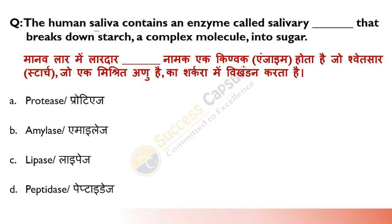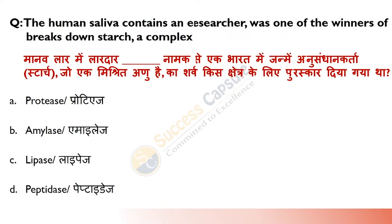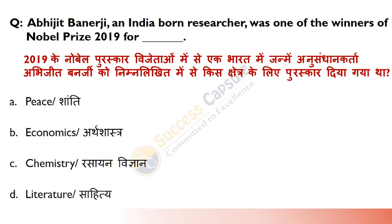Next question: Human saliva mein kaun sa enzyme hota hai jo starches ko sugar mein breakdown karta hai? Answer hai B — Amylase. Carbohydrates ki mechanical aur chemical digestion mouth mein start hoti hai. Yeh question aapke previous year papers mein bhi pooch gaya hai.